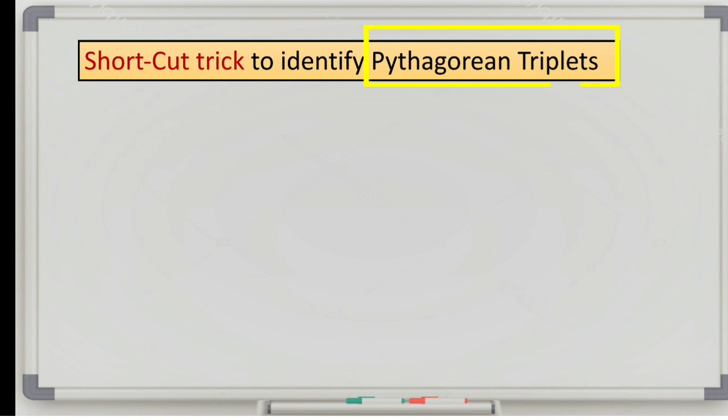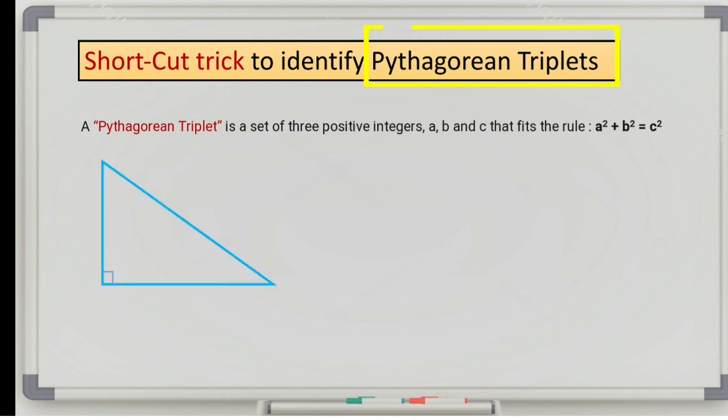A Pythagorean triplet is a set of three positive integers A, B and C that fits the rule A square plus B square is equal to C square. Pythagorean triplets completely satisfy the Pythagorean theorem.